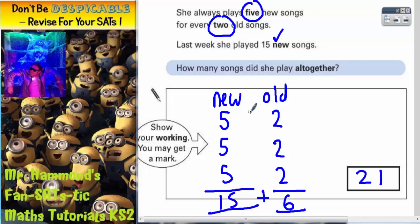What you're actually doing here is a ratio question, so five new songs for every two old songs is like saying the ratio of new songs to old songs is five to two. So five to two, if you make the new songs up to fifteen you've got three lots of five, so you'll then need three lots of two which would be six. Fifteen plus six makes twenty-one.